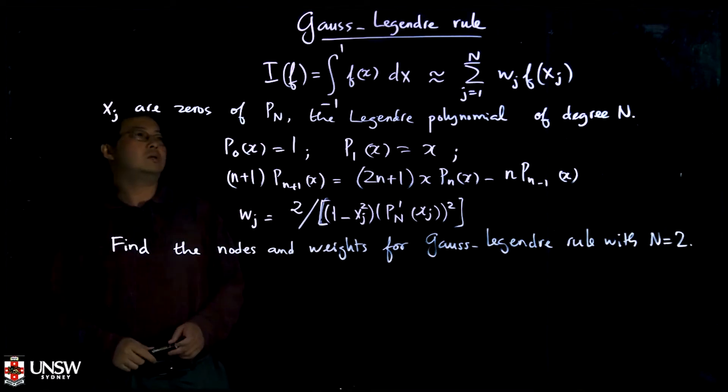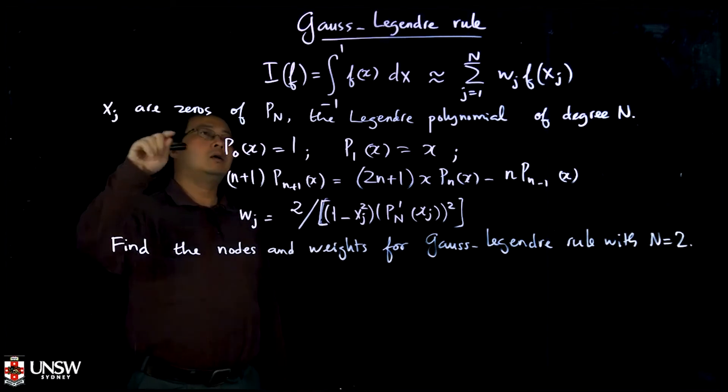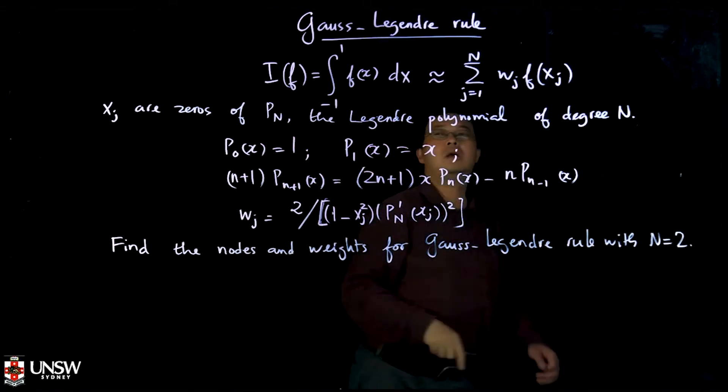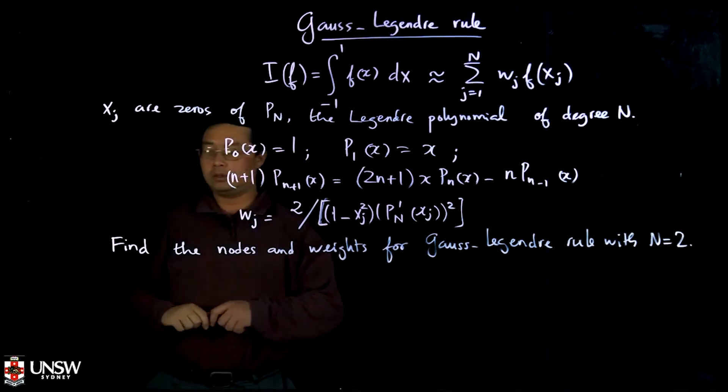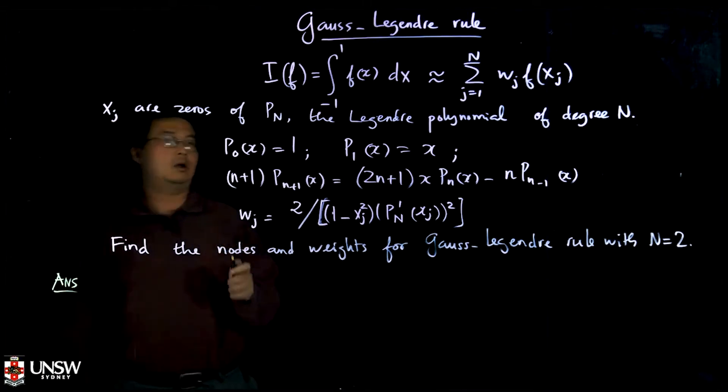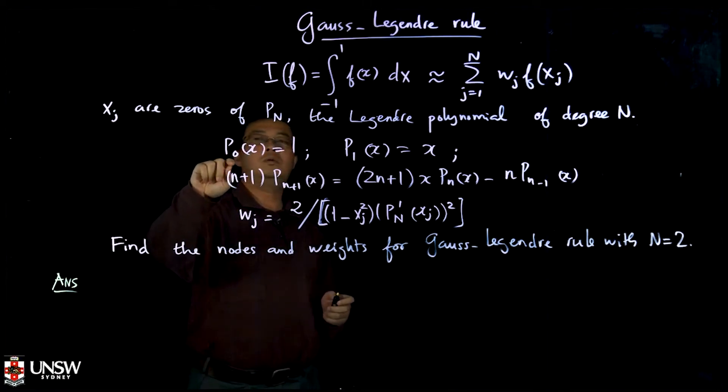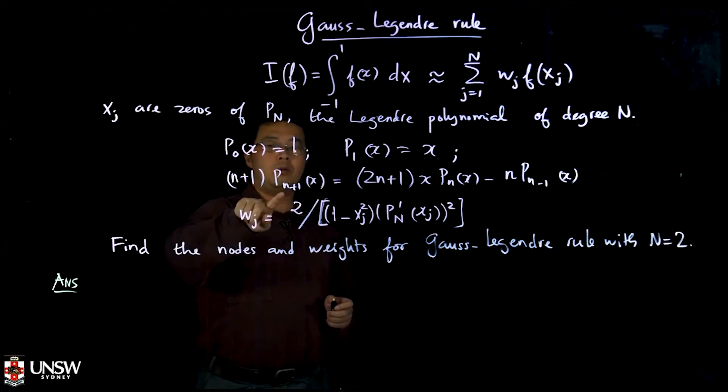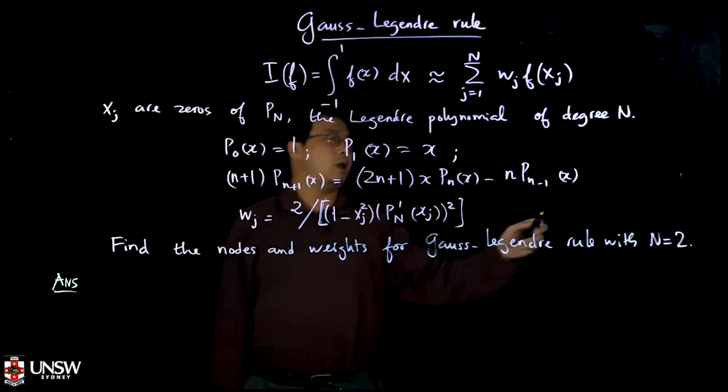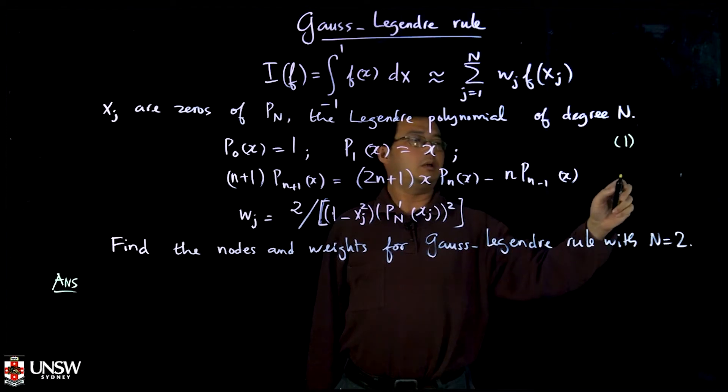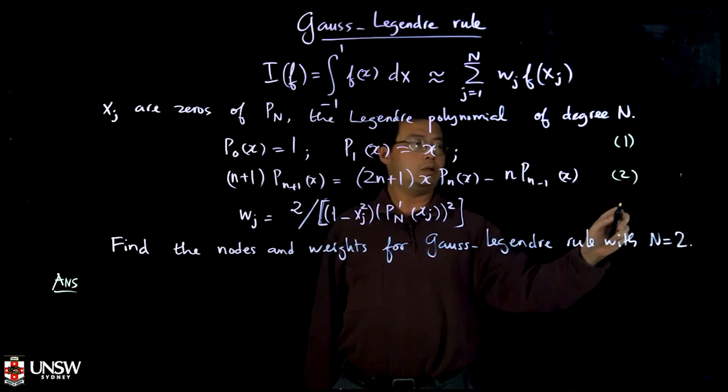Now suppose you want to find the Gauss-Legendre rules for two points, for degree n equal two. First we have to find the Legendre polynomial of degree two. We have P₀ already, we have P₁ already, so now in order to find P₂, then you just set n equal one. So suppose I label this one as formula one and two, and this one is three.